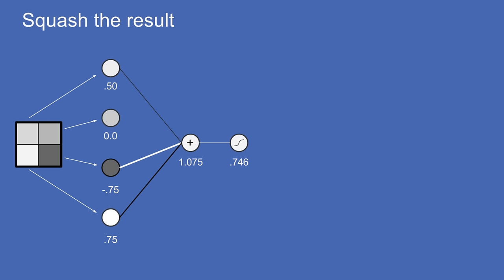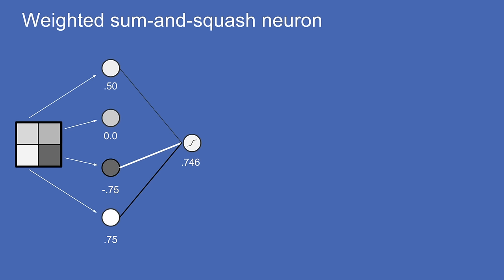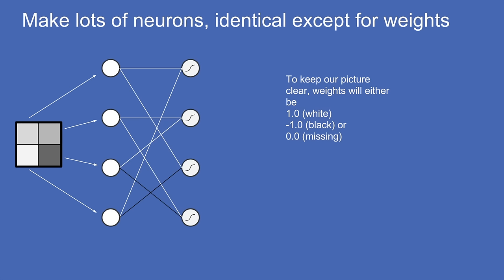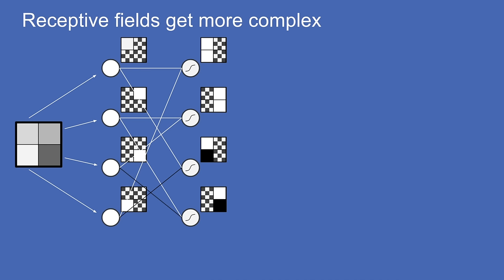After summing the weighted values and squashing the result, you get the output — in this case 0.746. That is a neuron: it does a weighted sum and squashes the result. Now instead of just one, assume you have a whole bunch — four shown here, but there could be 400 or 4 million. To keep the picture clear, we'll assume weights are either plus one, minus one, or zero. But in actuality, all neurons in a layer are connected to all input neurons, each with some weight between minus one and plus one.